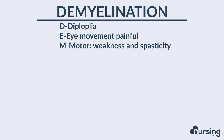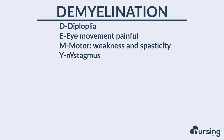Next is M for motor. This can be motor weakness or spasticity, meaning that every time a patient moves they may feel spastic, have muscle spasms, or feel weak. Y stands for nystagmus — patients with multiple sclerosis may exhibit nystagmus, which is the eye movement where it goes back and forth.